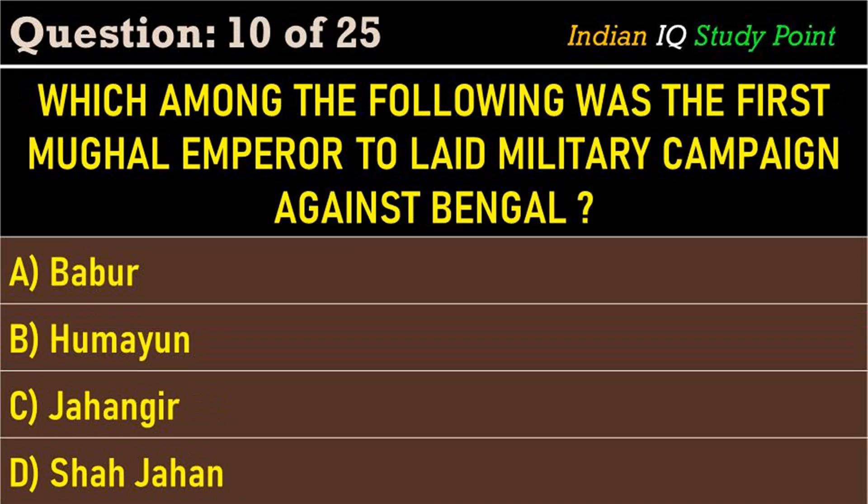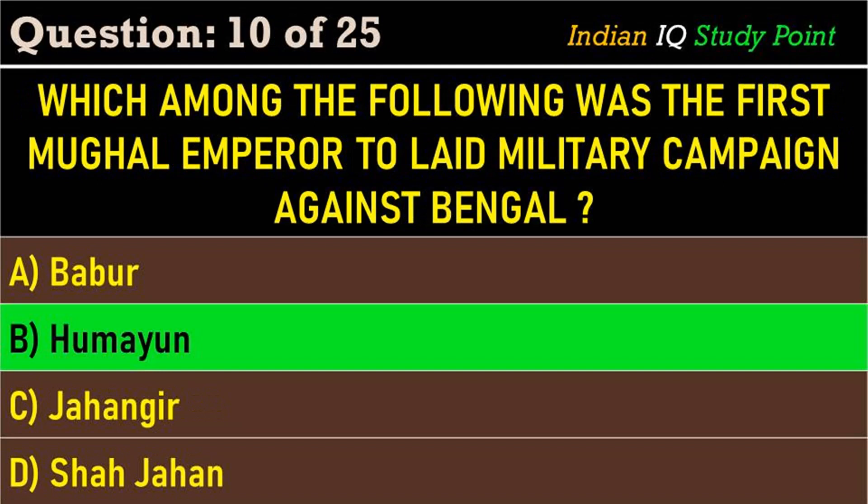Coming to the next question: which among the following was the first Mughal emperor to lay a military campaign against Bengal? Option A. Babar, B. Humayun, C. Jahangir, D. Shah Jahan. And the correct answer is Option B. Humayun.